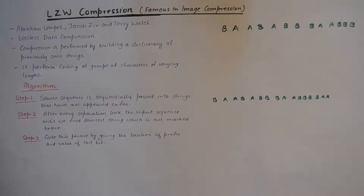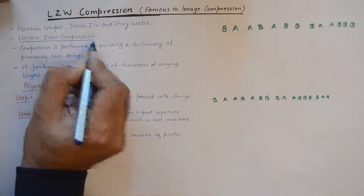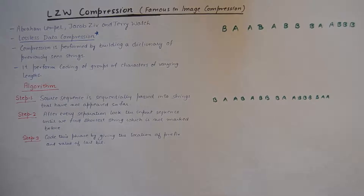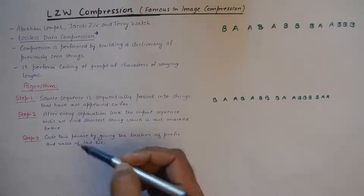LZW compression — Abraham Lempel, Jacob Ziv, and Terry Welch — these were the scientists who discovered this compression technique. It is a lossless data compression, which is a keyword you could put a star next to. The compression is performed by building a dictionary of previously seen strings. It then performs coding of groups of characters by varying lengths, and we'll see that too.